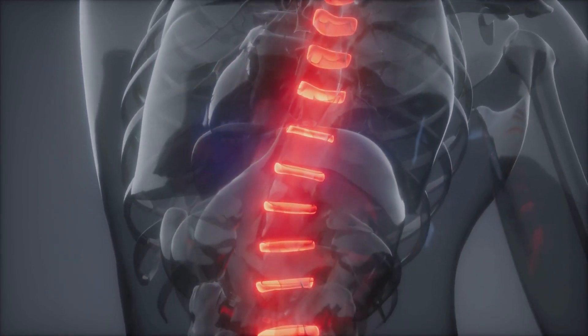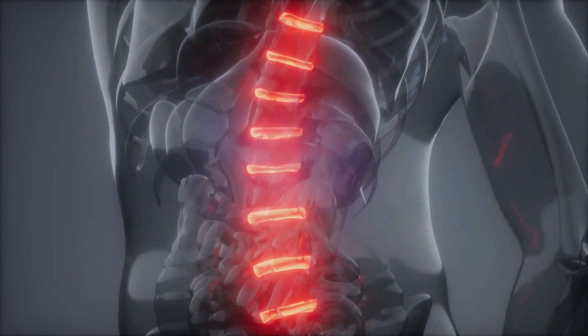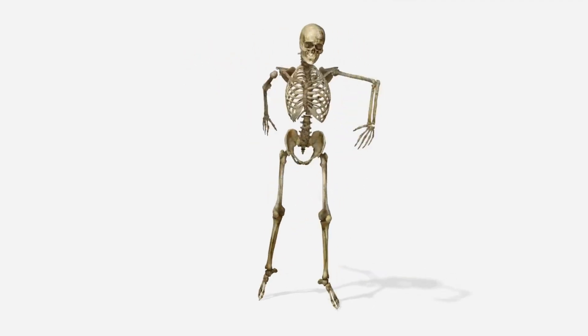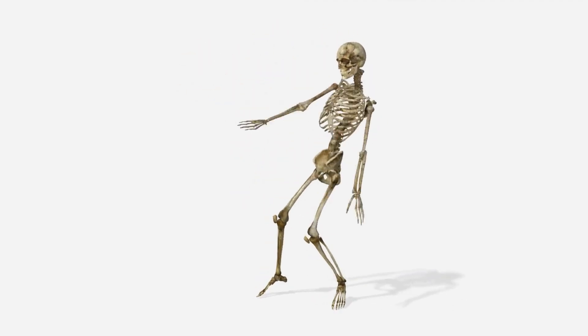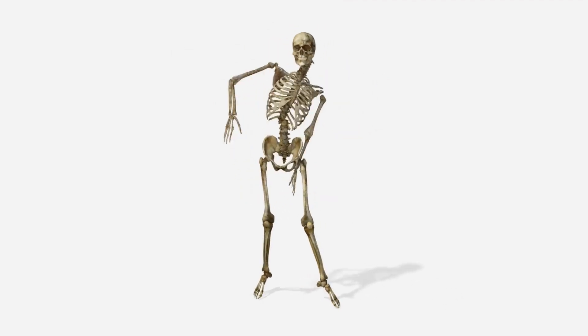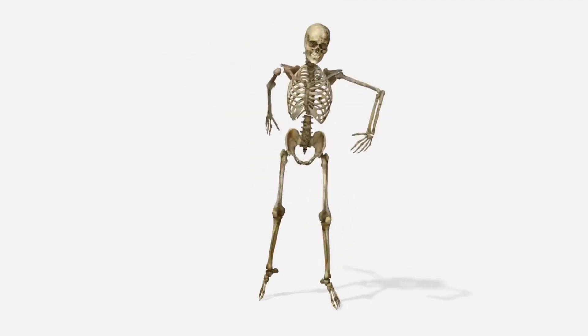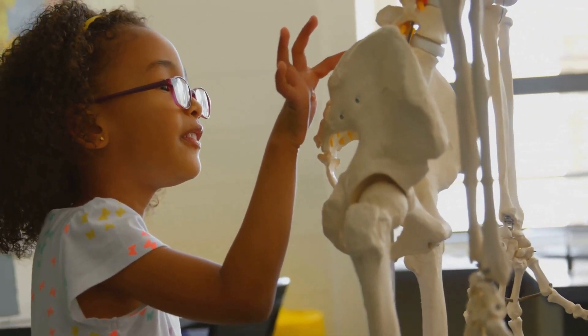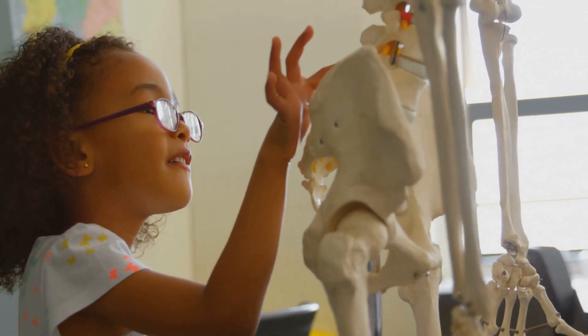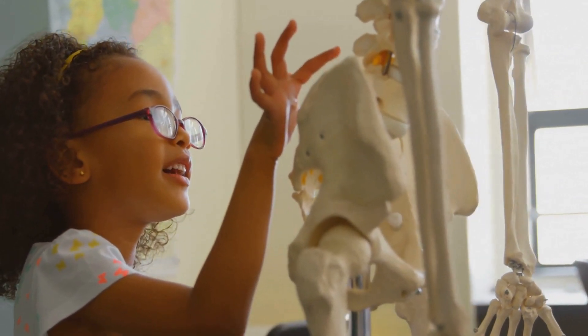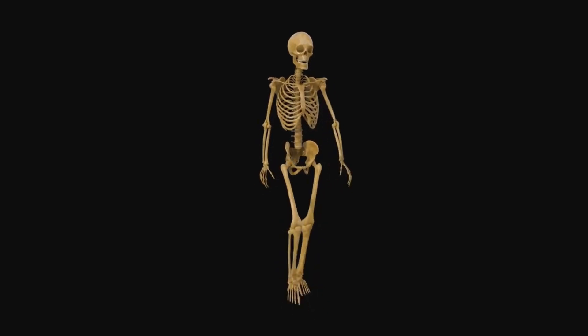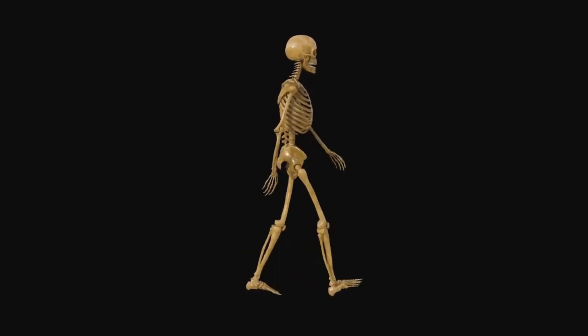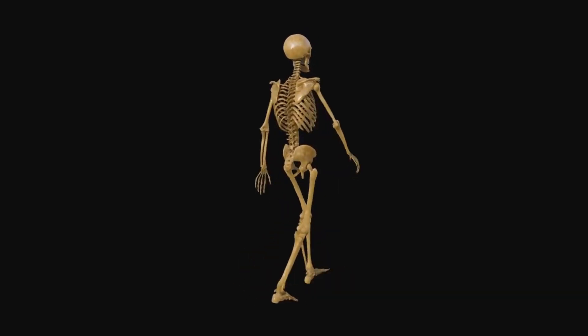Arm bones like the humerus, radius, and ulna are your super tools for waving hello, throwing a ball, or giving a high five to your friends. And don't forget your femur, the thigh bone. It's the longest and strongest bone in your body, helping you jump high and run fast. Every single bone has a special job, working together like a team to protect your organs, support your muscles, and help you move in amazing ways.